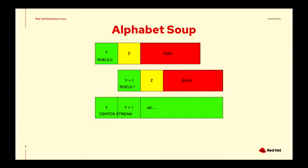There's EUS, there's AUS — that's why I labeled this slide alphabet soup. There are all these different phases of extended support, and we collectively refer to those as EUS+.